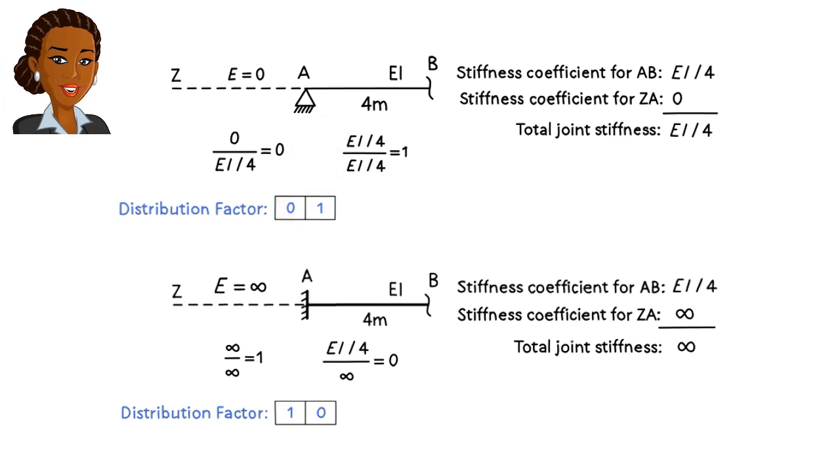But when the support is fixed, we can write both distribution factors since they enable us to determine the moment reaction at A, as well as the left member end moment for AB.